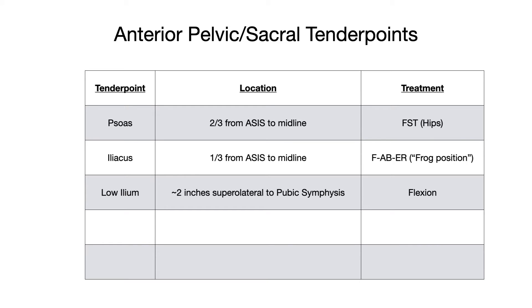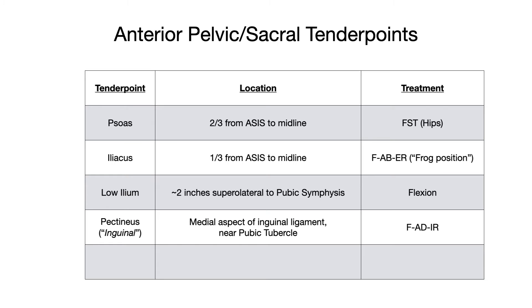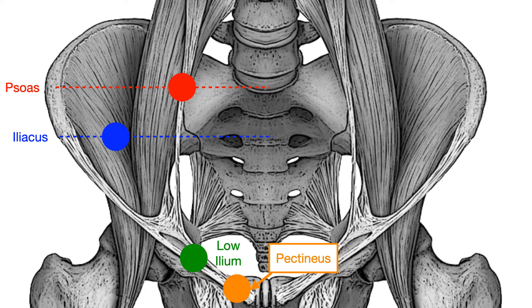Our next tender point is the pectineus tender point, also referred to on exams as the inguinal tender point — these terms are used interchangeably. It's located on the medial aspect of the inguinal ligament, right around the pubic tubercle. Right on the medial aspect of where the inguinal ligament inserts near that pubic tubercle is where this tender point is located. The treatment position is flexion, adduction, and internal rotation — FADIR. On the diagram, the pectineus or inguinal tender point is shown in orange.